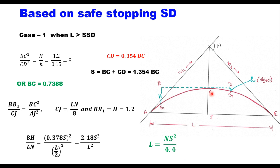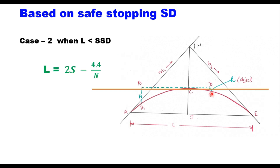Similarly, for Case 2 when the curve length L is less than SSD, by following the same procedure as for OSD, the equation becomes L = 2S − 4.4/N. This is how we calculate the length of the vertical curve for all four cases.